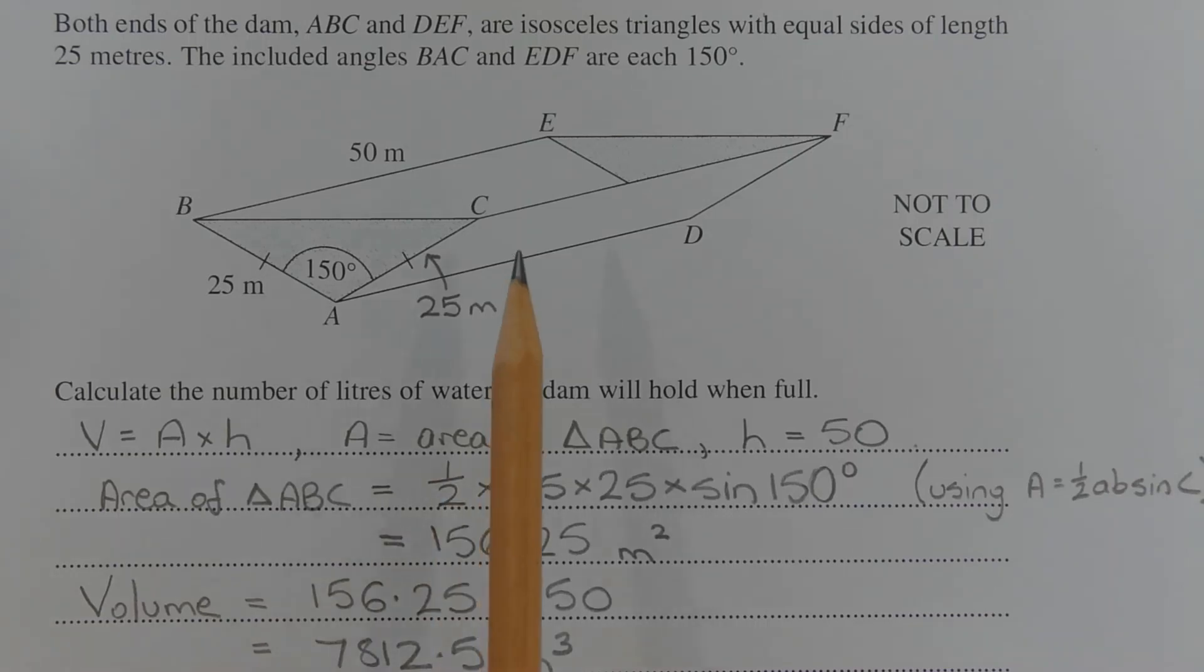The volume of any prism, V, is given by the formula V equals A times H, where A represents the area of the cross section and H represents the height or the length of the prism.